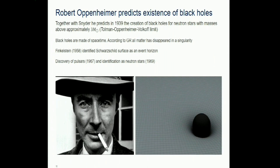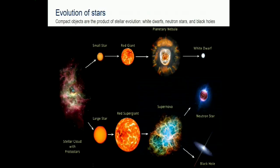Other solutions from GR were black holes. In 1939, Snyder (a student of Oppenheimer) predicted the existence and creation of black holes: for objects larger in mass than about three solar masses, nothing known in nature can stop the collapse. They are purely made of spacetime - all matter is gone. Finkelstein in 1958 introduced the idea of the event horizon, and in 1967 came the discovery of pulsars, essentially identified as neutron stars. For generation of gravitational waves we need compact massive objects moving with large accelerations.